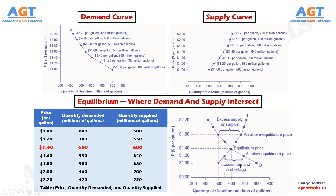Again, when the price is below equilibrium, there is excess demand, or a shortage — that is, at the given price the quantity demanded, which has been stimulated by the lower price, now exceeds the quantity supplied, which had been depressed by the lower price. In this situation, eager gasoline buyers mobbed the gas stations, only to find many stations are running short of fuel. Oil companies and gas stations recognize that they have an opportunity to make higher profits by selling what gasoline they have at a higher price. As a result, the price rises toward the equilibrium level.